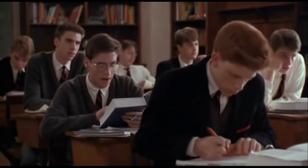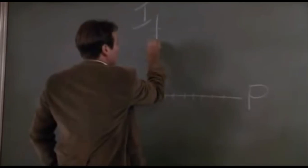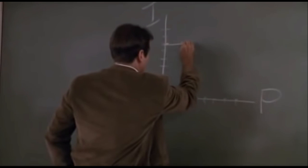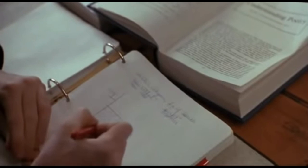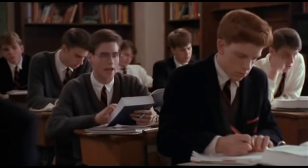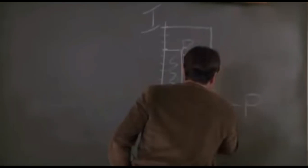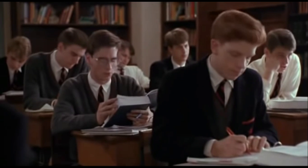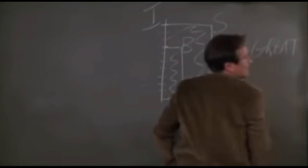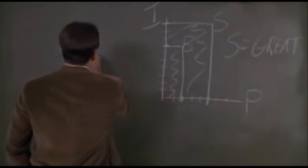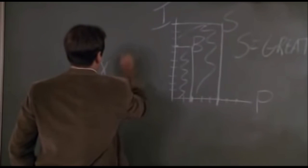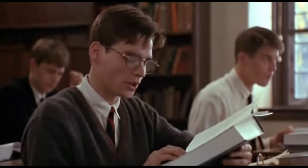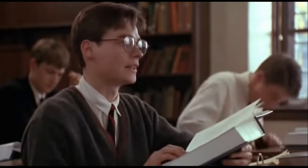A sonnet by Byron might score high on the vertical, but only average on the horizontal. A Shakespearean sonnet, on the other hand, would score high both horizontally and vertically, building a massive total area, thereby revealing the poem to be truly great. As you proceed through the poetry in this book, practice this rating method. As your ability to evaluate poems in this manner grows, so will your enjoyment and understanding of poetry.